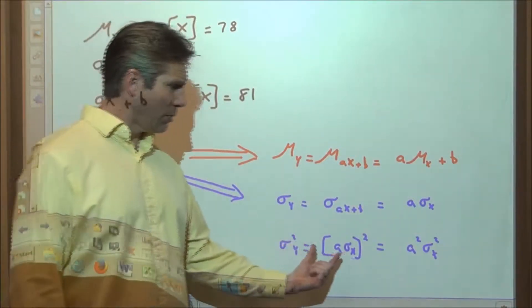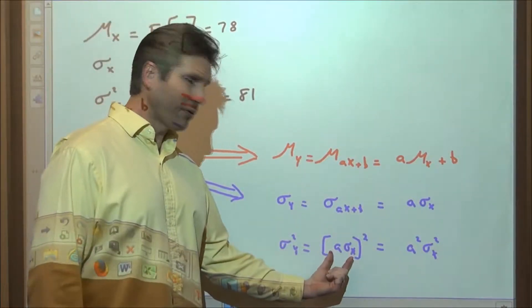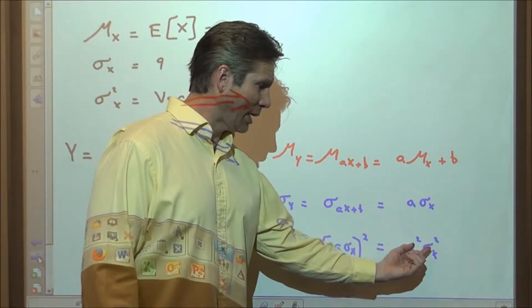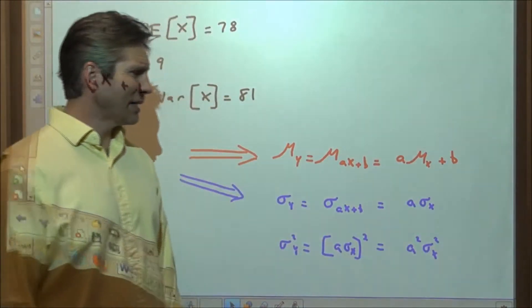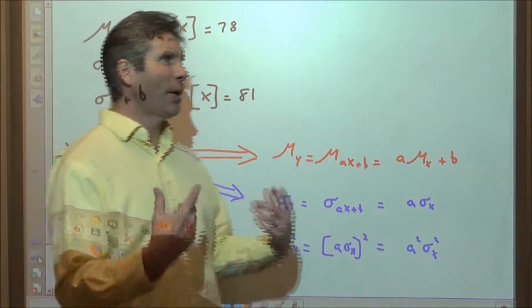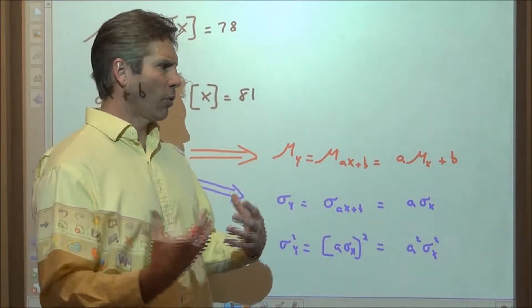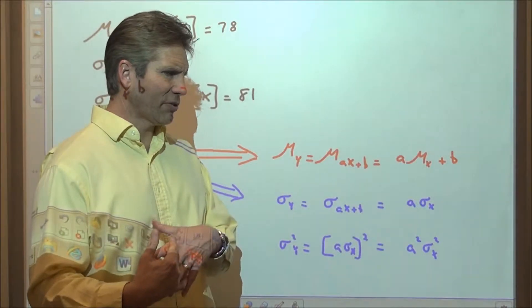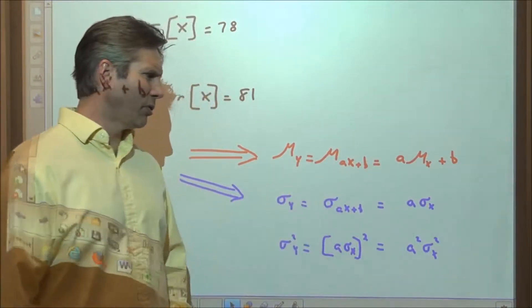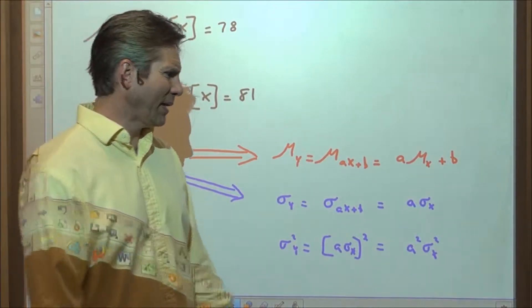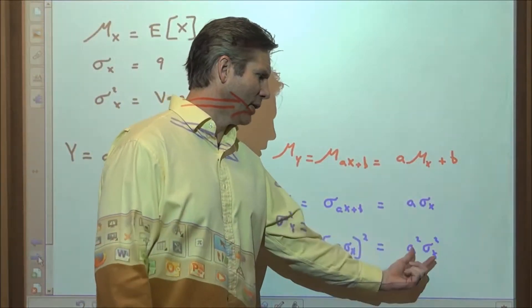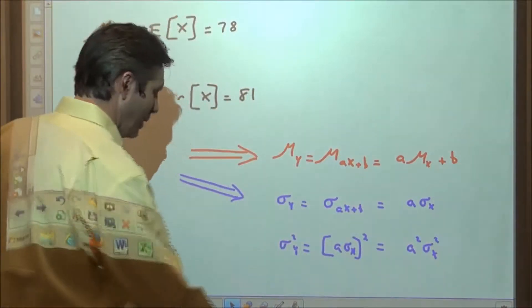The new variance is going to be a squared times the old variance. A lot of times in a stat problem, instead of memorizing that, you can just find the new standard deviation and then square it, and you'll automatically find the new variance.